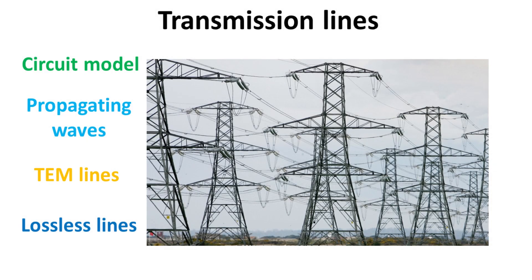When the electrical signals propagate through a wire much faster than the period of its highest frequency component, we treat the wire as a perfect short circuit and assume the voltage across the two ends are the same. This is what we learned in introductory electrical circuit courses on lumped elements.